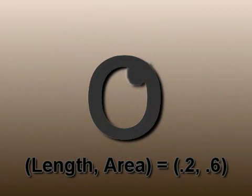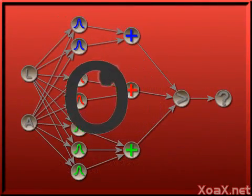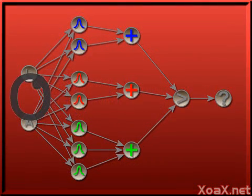To see how it works, imagine that we have this imperfectly printed O character. To generate the classification of our character, we begin by putting the parameter values into our input units.